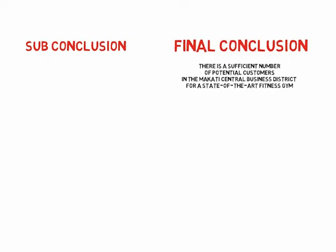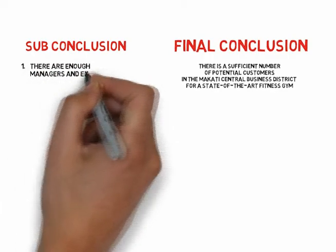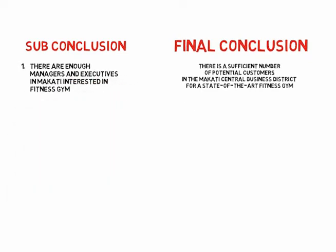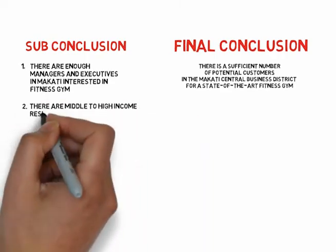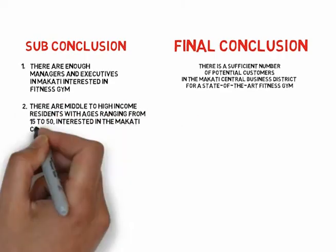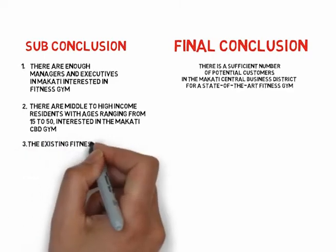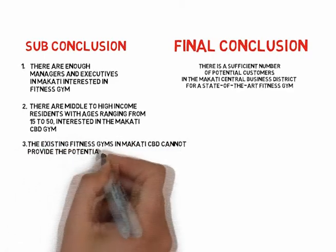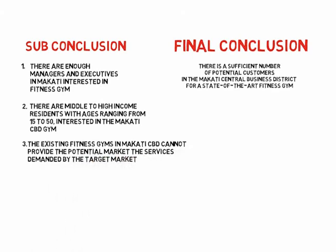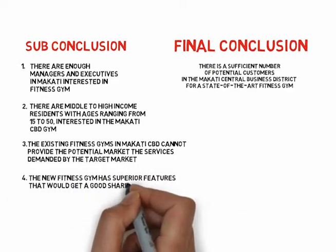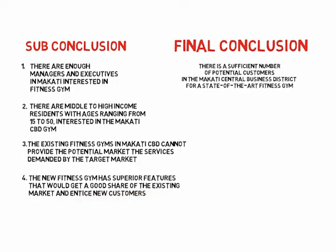This final conclusion is supported by four sub-conclusions. Number one: there are enough managers and executives in Makati interested in the fitness gym. Number two: there are enough middle to high-income residents with ages ranging from 15 to 50 interested in the Makati CBD gym. Number three: the existing fitness gyms in Makati CBD cannot provide the services demanded by the target market. Number four: the new fitness gym has superior features that would get a good share of the existing market and entice new customers.